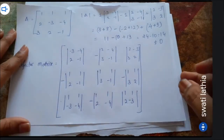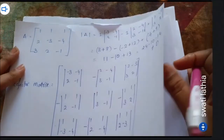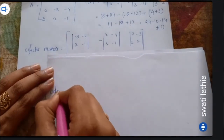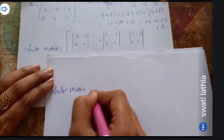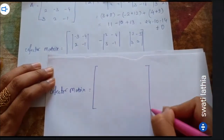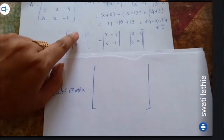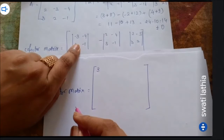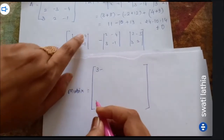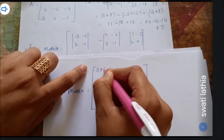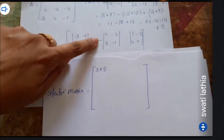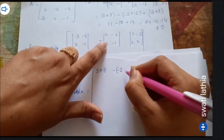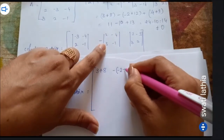Next page — we start with the co-factor matrix. Computing each cofactor with appropriate signs: plus 3 plus, 4 into 2 equals 8 plus, applying the sign pattern. The second element: sign is minus, and the third: plus, giving x plus 1 and related terms.